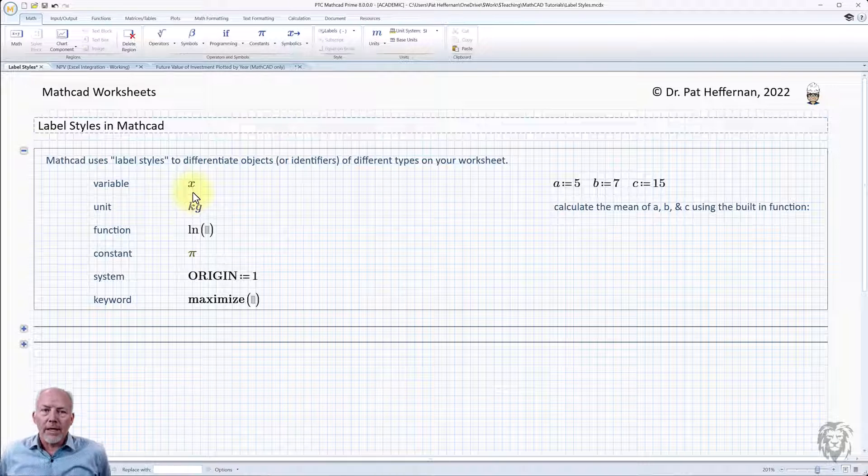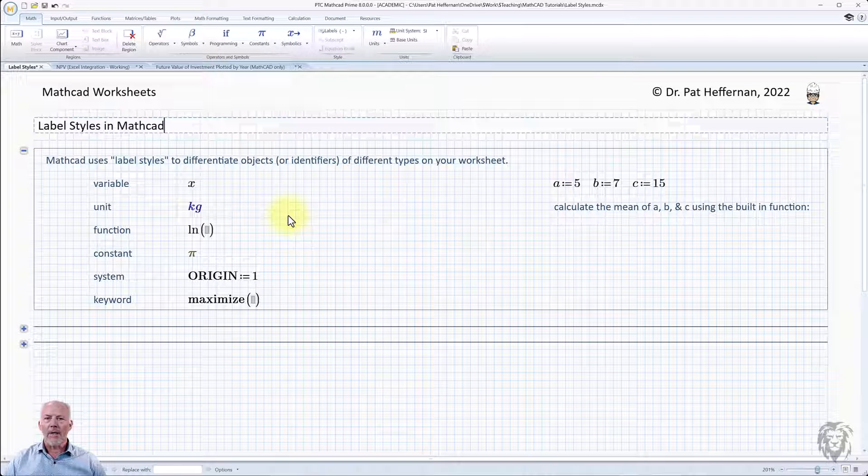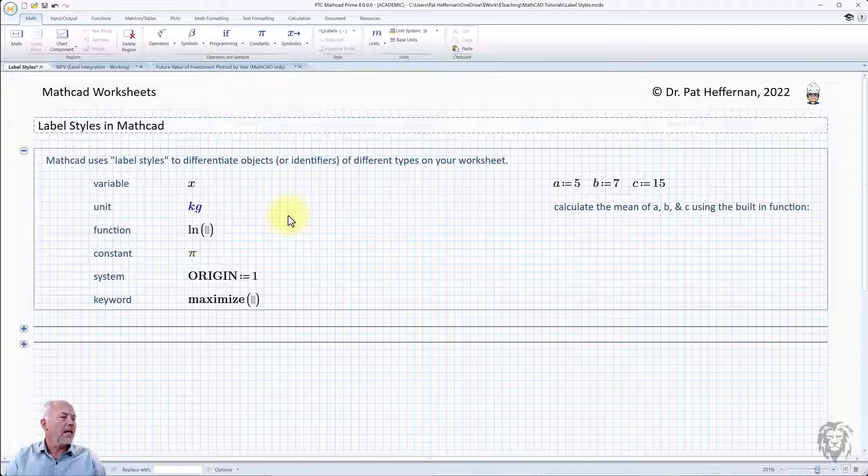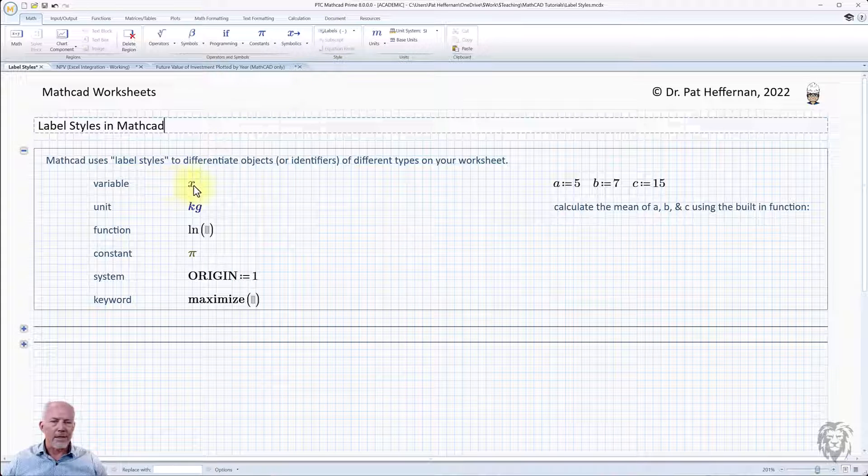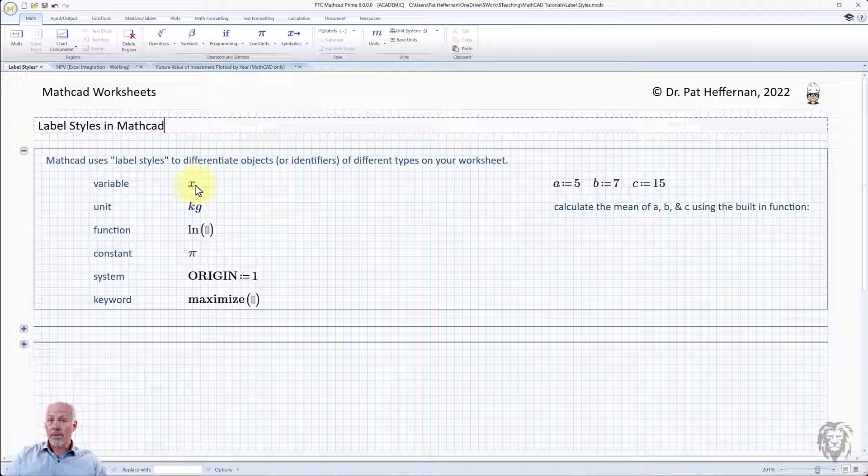So the first one that you're probably the most used to is variables. And so whenever we type in a variable, we say F equals, F at T equals, these are the variables label that is determined. Mathcad kind of assumes that's what you want to use. And it's going to apply the variable label and it's going to look like that. Of course, we'll talk about formatting later. If we want to change the formatting, that's certainly possible. But right now, let's just look at what the variable means. And so Mathcad will interpret that as a variable. And as long as you meant it to be a variable, that's great.